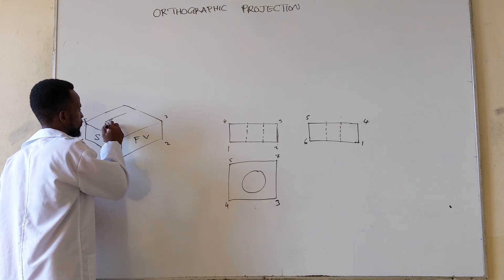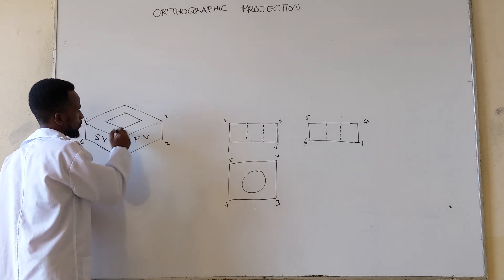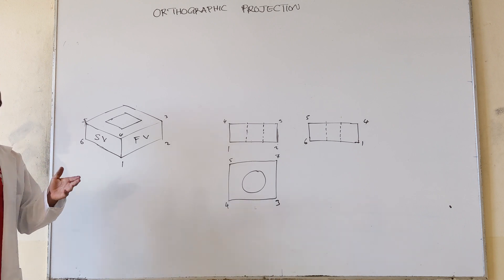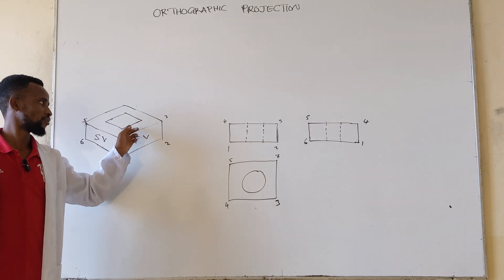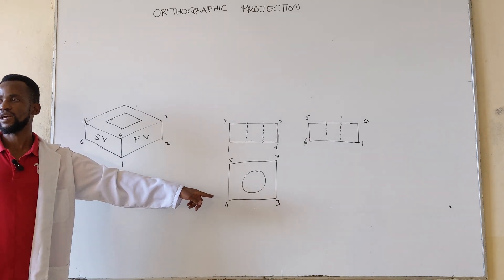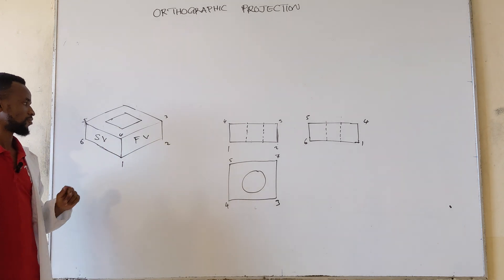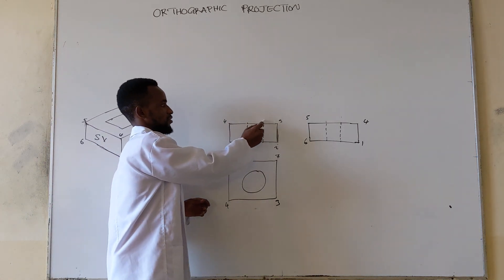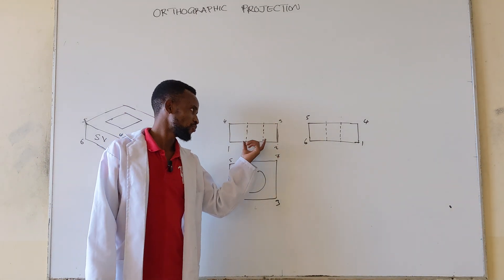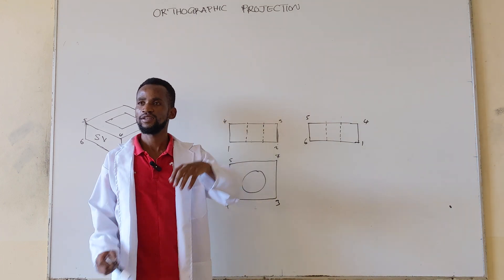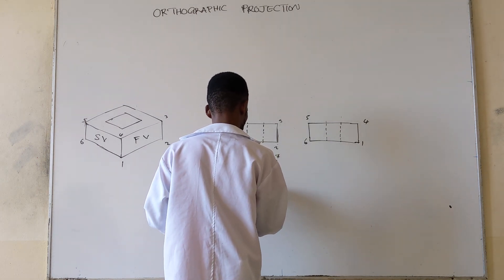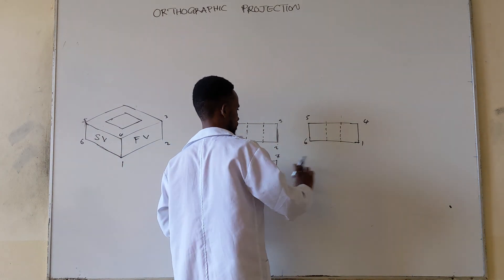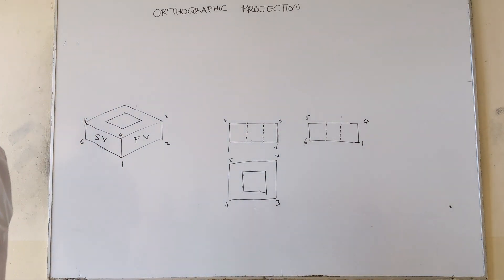Let's take for instance that instead of a circle we have a square with a side length equal to the diameter of the circle. For this square, the distance from this point to that point will be the same as from that point to that point. When you look at it from the top, you will find a square. This distance should be the same as that distance — the same concept applies.